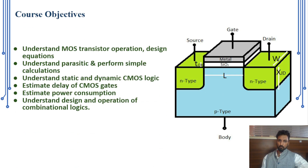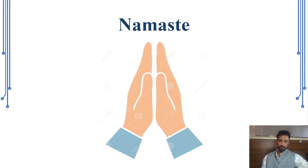The course objectives of VLSI are: to understand MOSFET transistor operation, design, and equations; understand parasitics and perform simple calculations; understand static and dynamic CMOS logic; estimate delay of CMOS gates; estimate power consumption; and understand the design and operation of combinational circuits. These are the major course objectives to be covered in upcoming lectures. This is all about the introduction of VLSI — I hope you enjoyed it. Thank you, Namaste.